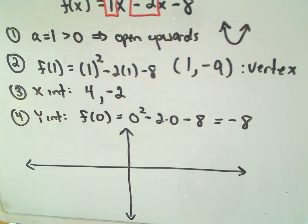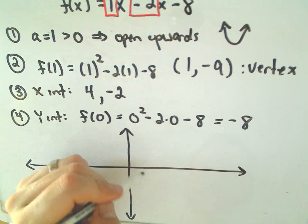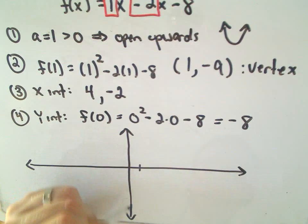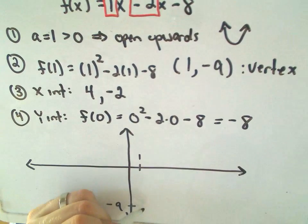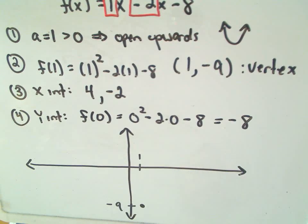Okay, so the first thing I'm going to plot is the vertex. So it says I go over 1 unit and down 9 units. A very rough sketch here. I'm not counting off units or anything like that.